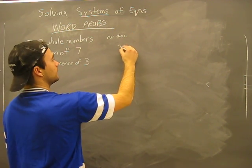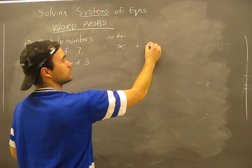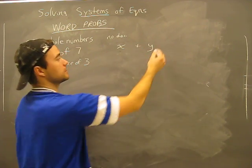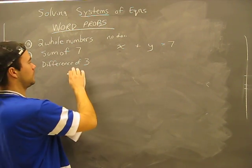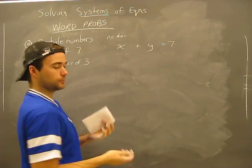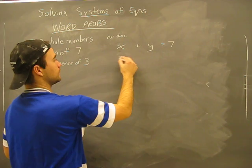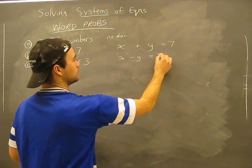So we have two different numbers that equals seven. The difference is there's a difference of three, which means if you subtract one from the other you get three.